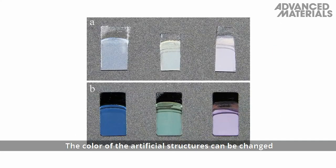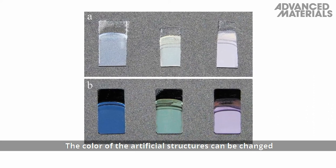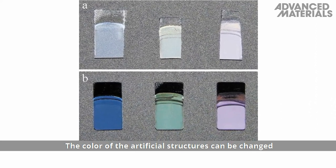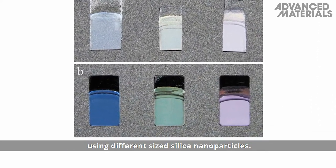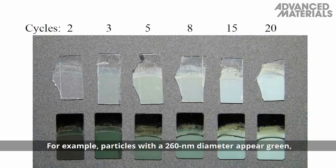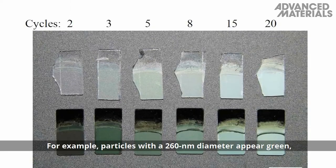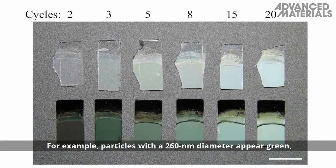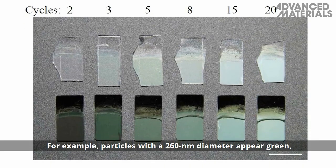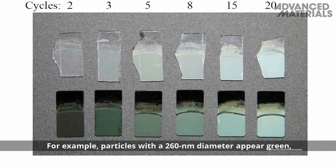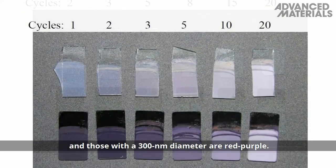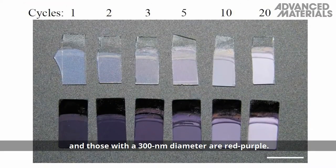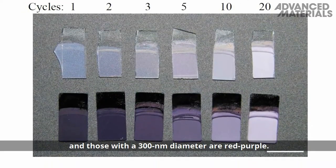The color of the artificial structures can be changed using different sized silica nanoparticles. For example, particles with a 260 nanometer diameter appear green, and those with a 300 nanometer diameter are red-purple.